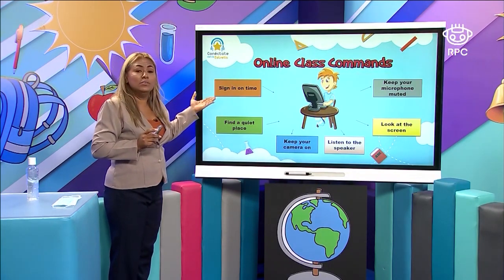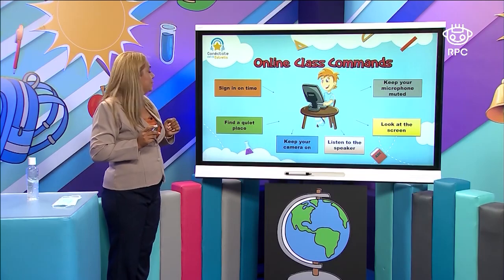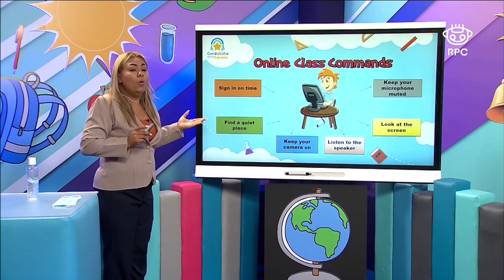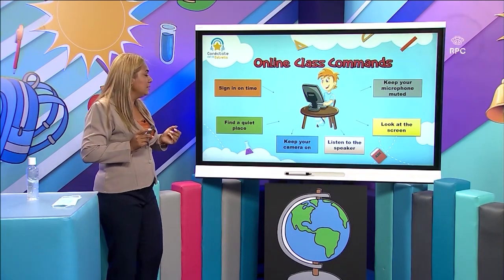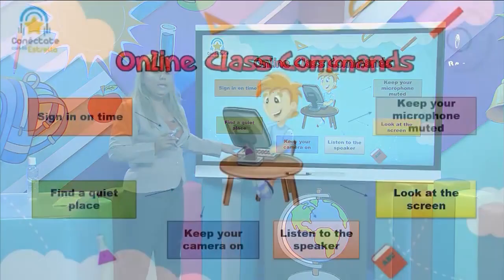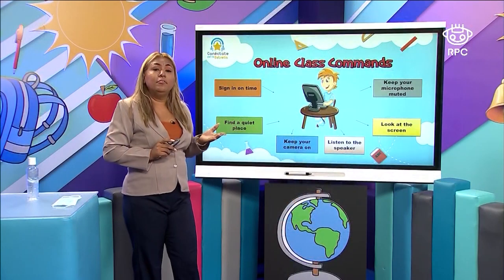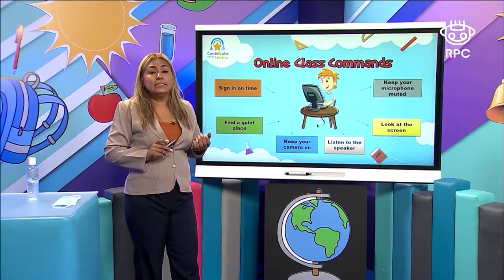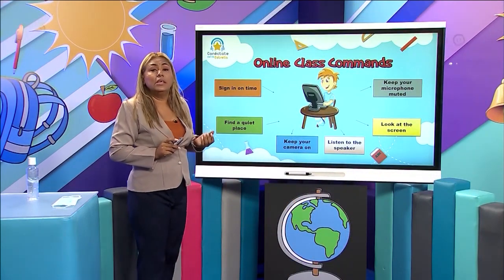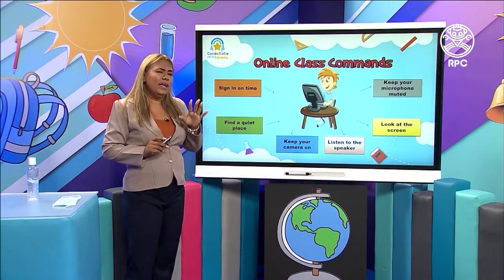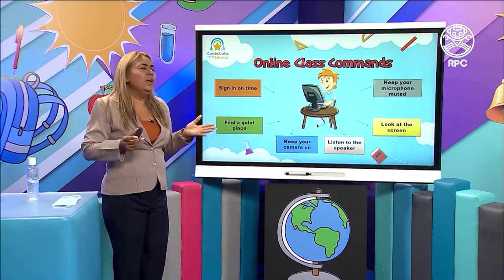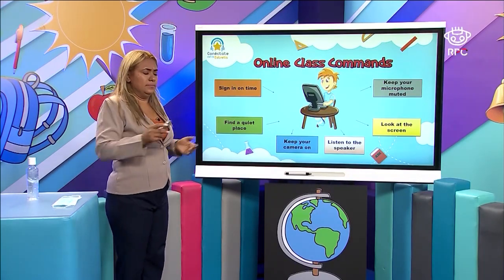For example, you see signing on time. You need to find a quiet place. Keep your camera on. You need to listen to the speaker. Keep your microphone muted. And you need to look at the screen. Let's discover what each one means.